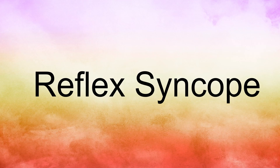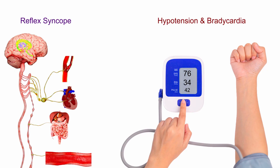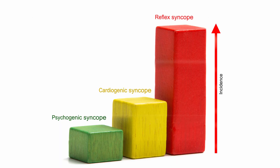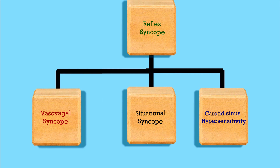Reflex syncope occurs when certain stimuli neurologically trigger hypotension or bradycardia and subsequently syncope, followed by complete recovery without any treatment. It is the most common form of syncope. This includes vasovagal syncope, situational syncope, and carotid sinus hypersensitivity.